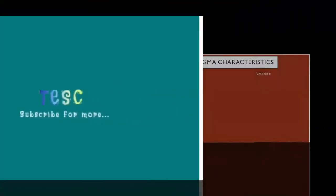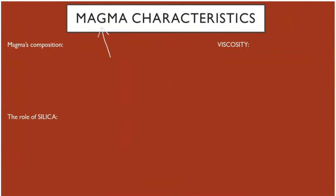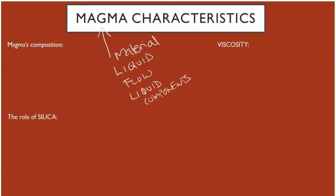So magma — let's look at magma as a material. First, it is a liquid and it's going to flow as a liquid. It's going to contain liquid components, and the different characteristics come from the behavior of this fluid in different conditions, and that is derived from its composition.